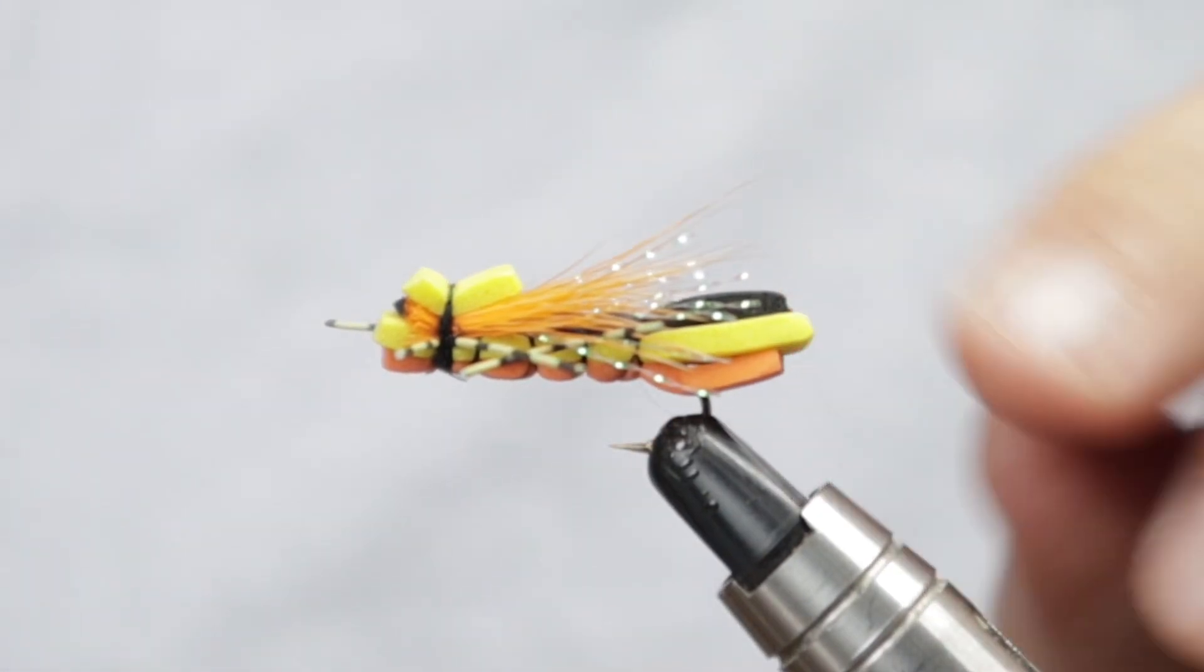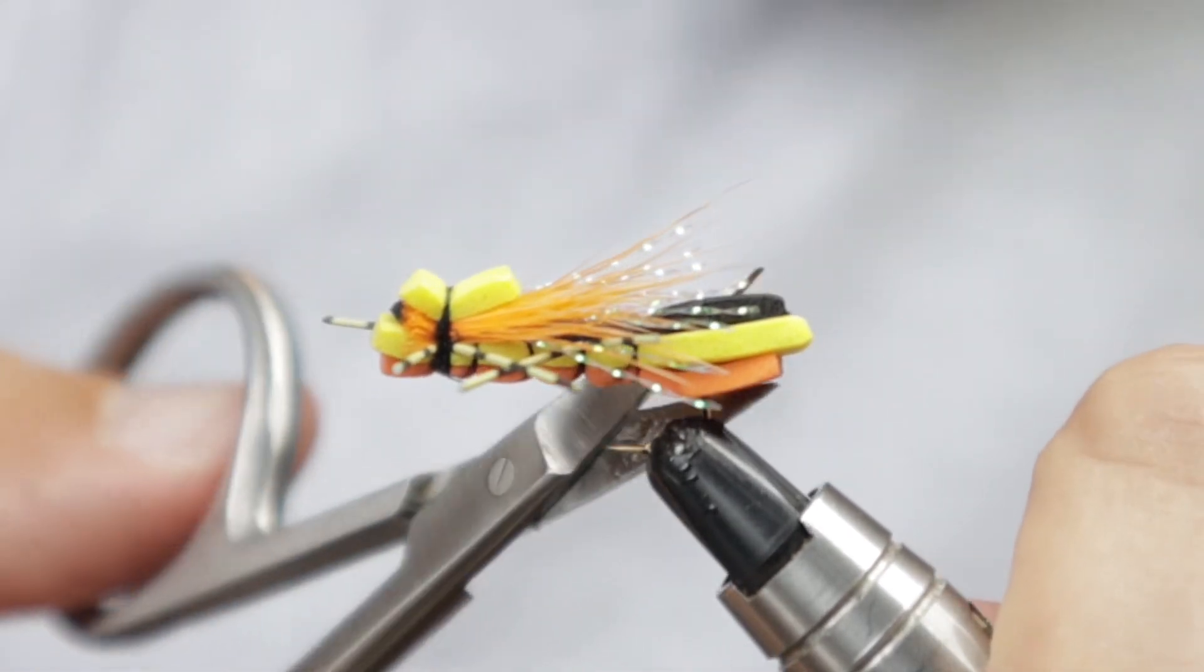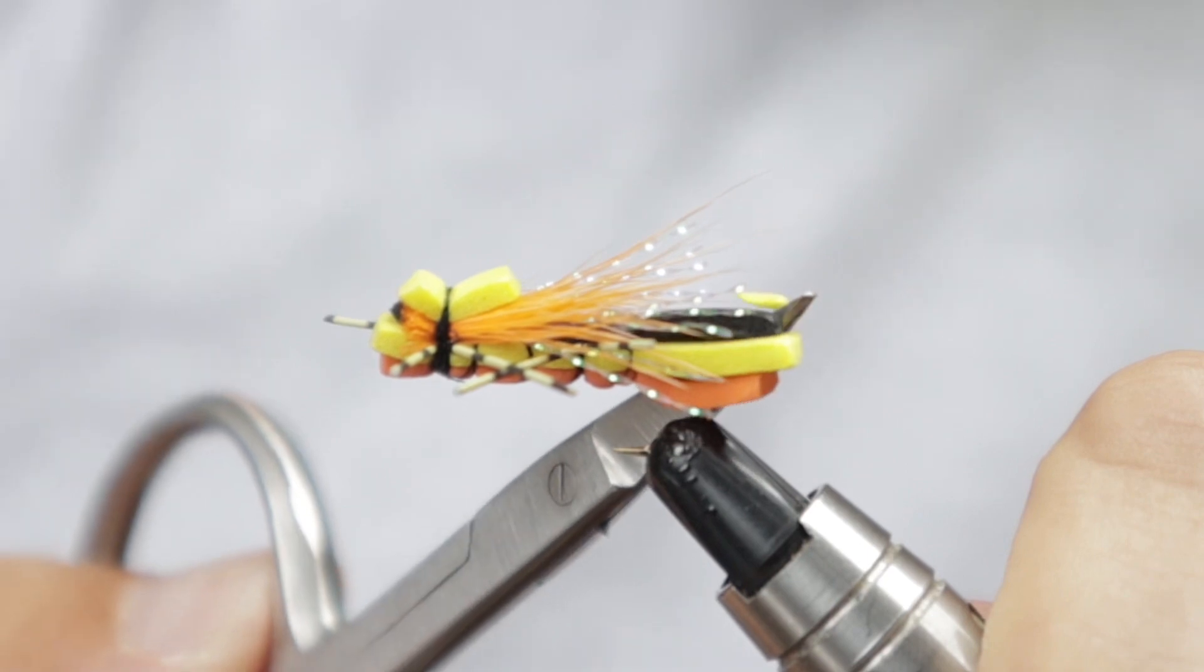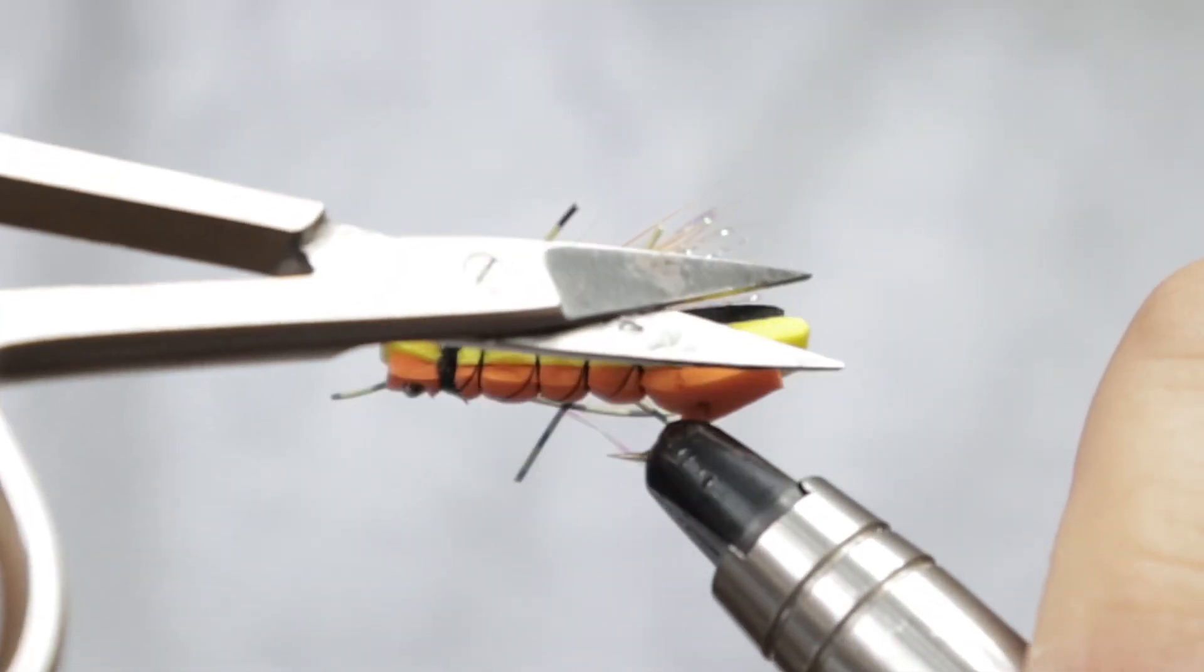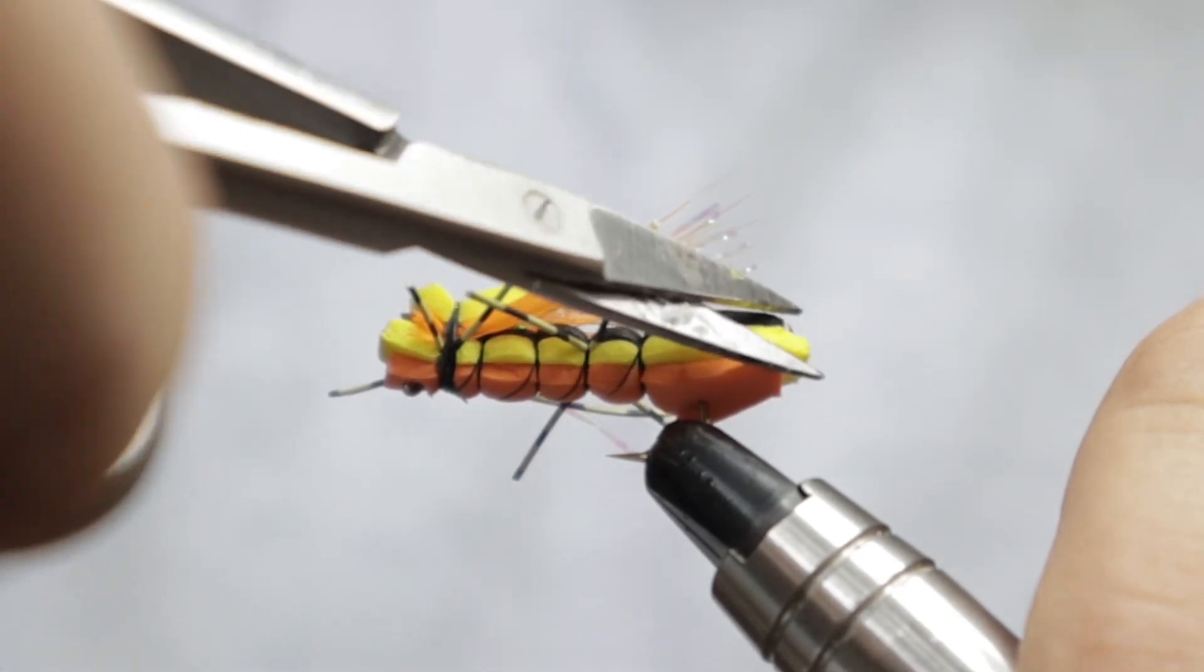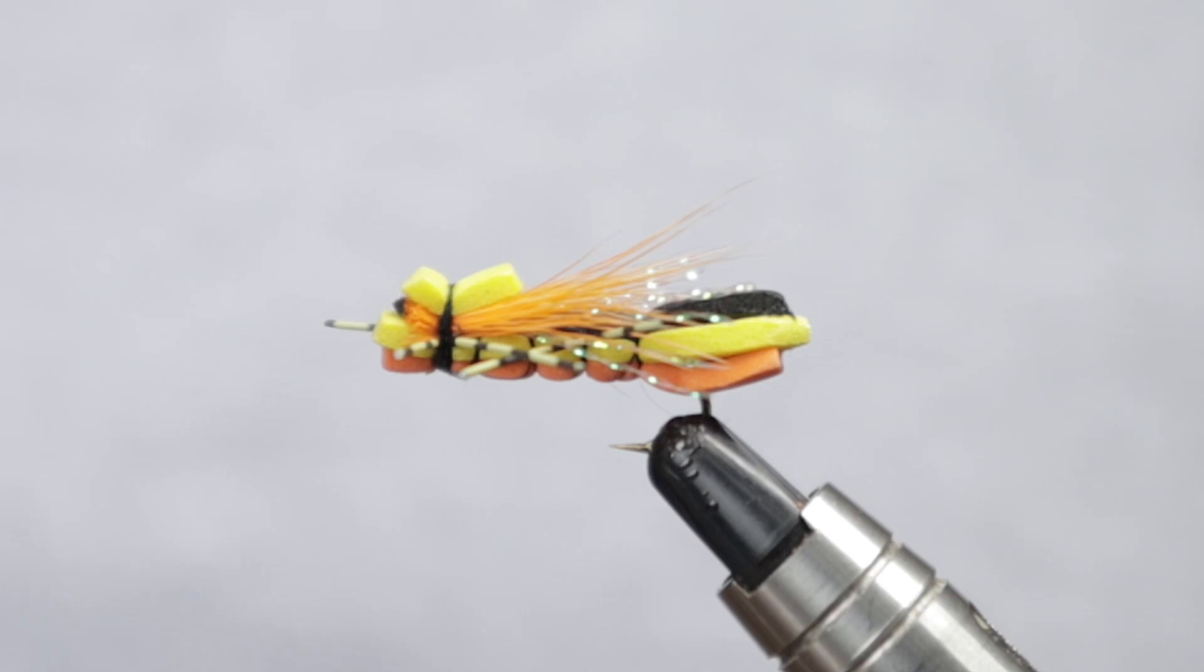The last thing to do is just tidy up this back end piece and cut it into a shape that you're happy with that's effectively buggy enough for you. I'm just going to tidy this up a little bit, take those corners away into more of a point. There you have it folks, a somewhat Chernobyl ant type fly that will definitely float. There's no chance this thing's sinking anytime soon. Hopefully if the fish are looking up and are happy to take something that's being pulled across the surface, they'll come up and hit it.